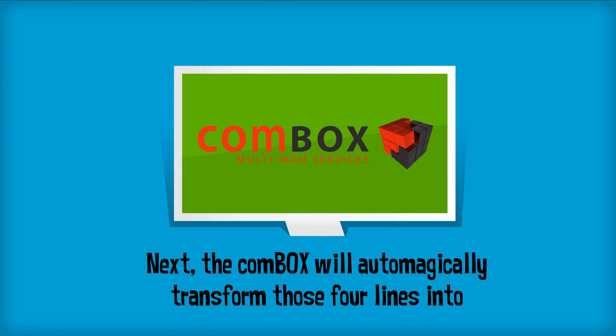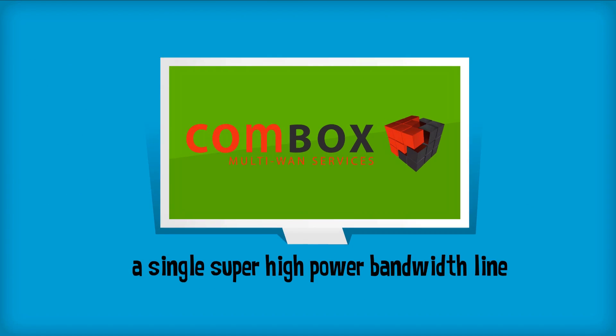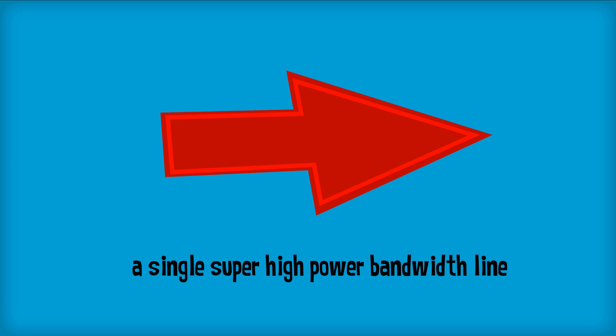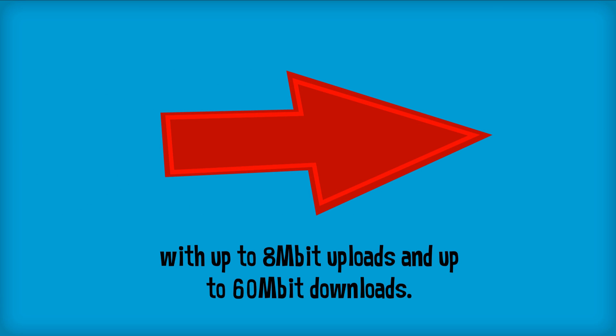Next, the CommBox will automatically transform those 4 lines into a single super high power bandwidth line, with up to 8 megabit uploads and up to 60 megabit downloads.